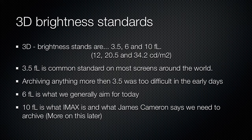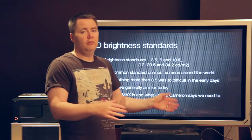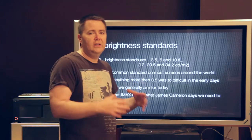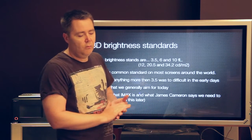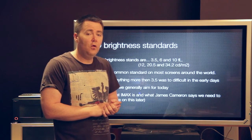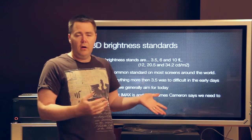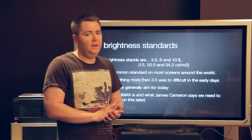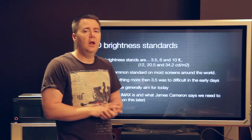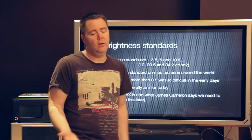Now let's jump to the 3D brightness standards. There are a few, and there are reasons for that: 3.5, 6, and 10 foot lamberts. In the early days it was very hard to get above 4 foot lamberts at all, so 3.5 was a common standard and it's still used in some cinemas today. Generally we're moving toward 6 foot lamberts — it's a much better brightness and moviegoers definitely appreciate the extra brightness. But really, IMAX sets for 10 foot lamberts, and James Cameron's demonstration at CinemaCon last year was that we need to get to 10 foot lamberts. I do agree — when I saw that presentation, 10 foot lamberts really makes it pop and feel more realistic in 3D. The more realistic it is, the better it is for us and our brains — and headaches, if you're going to get one.